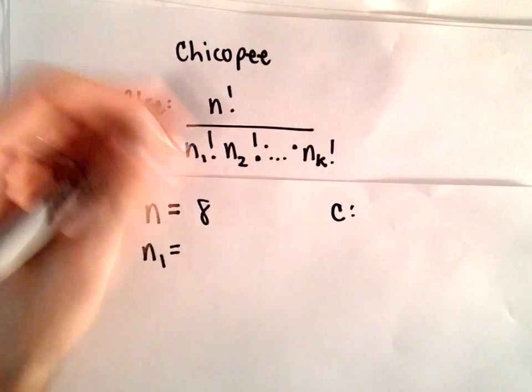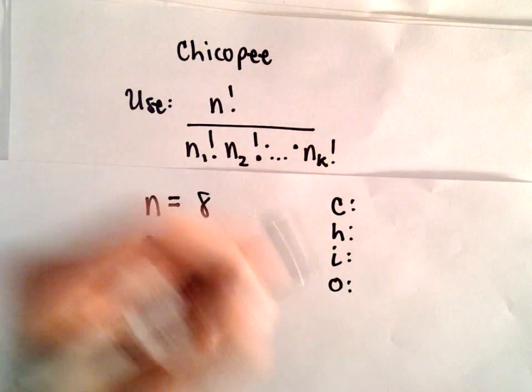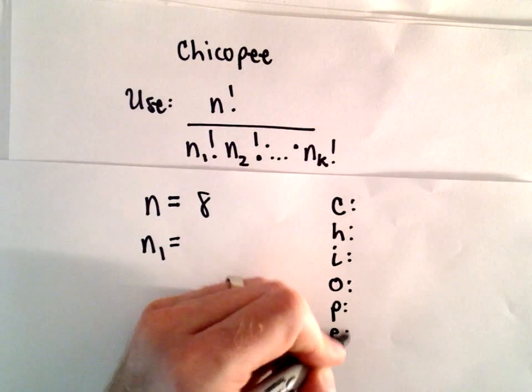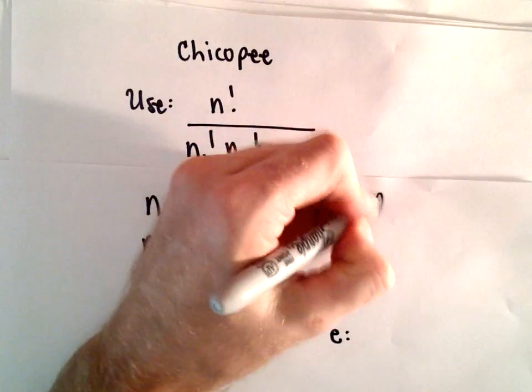I'm going to list. We've got the letter C, H, I. We've got another C, we've got O, P, and E. Let's count the number of each. So there's 1, 2 Cs.